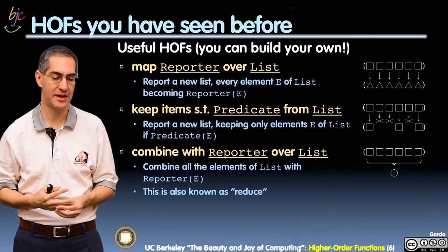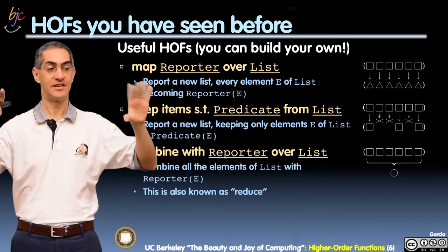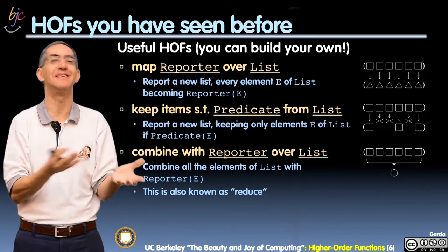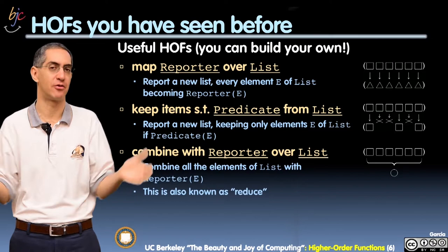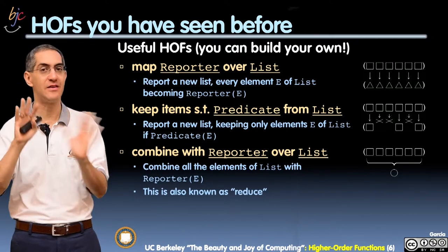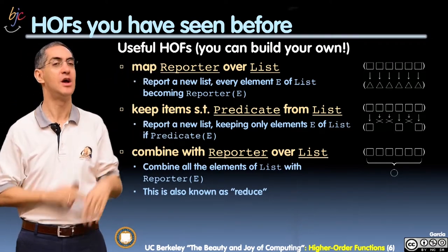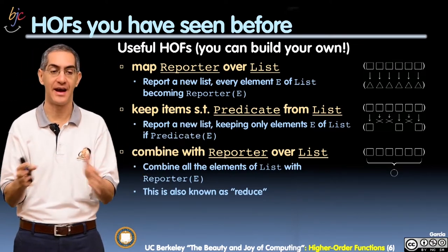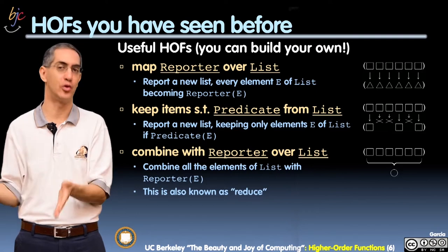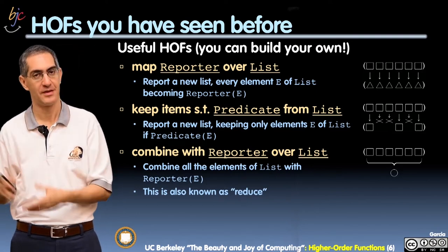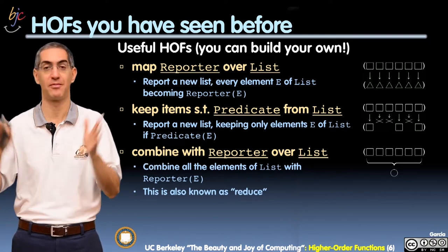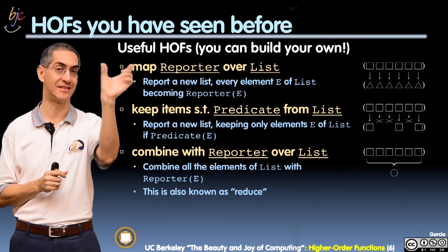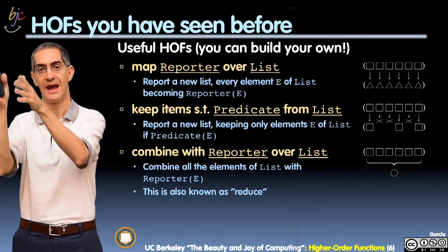KEEP is something that takes a list but does not transform it — instead, it only keeps the things that satisfy a predicate and returns a new list. None of these modify the original list; it's very important — none of these mutate the original list. They all return a new list. Some elements survived and some didn't. Sometimes all of them are kept, sometimes none of them are kept. KEEP takes in a predicate — a true/false function of one argument — and a list.